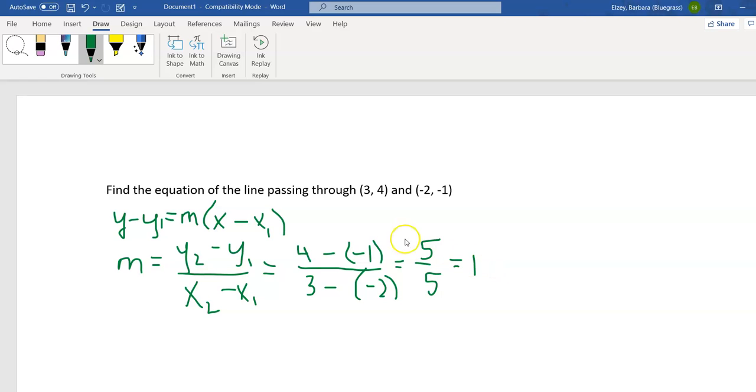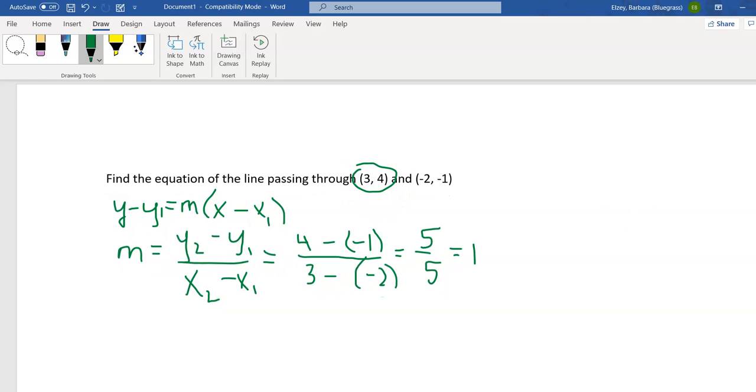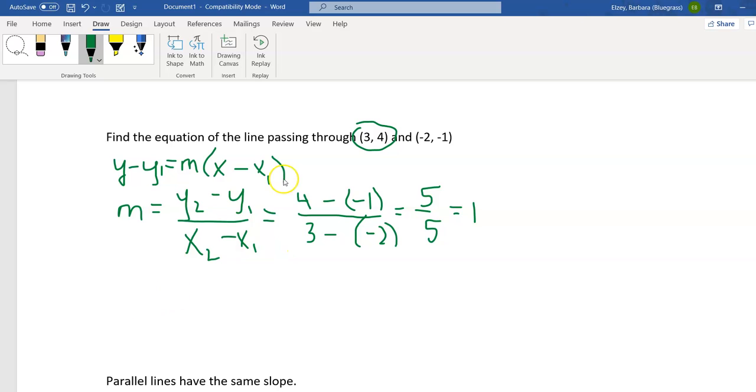So let's plug in a slope of 1, and either one of these two points, it doesn't matter. I'm going to use this point just because I think it will be cleaner. So let's plug in this as my x1 and my y1, so I'll have y minus 4, m is 1, x minus 3.